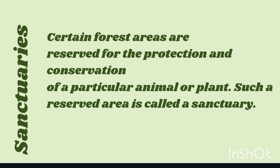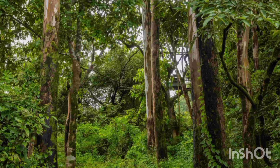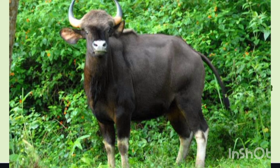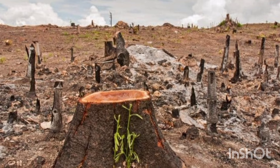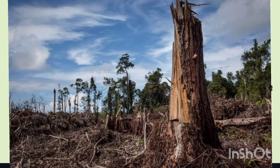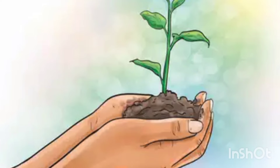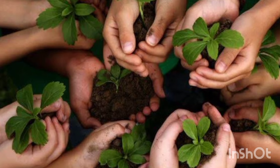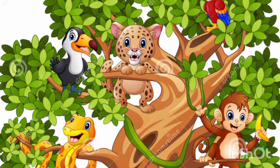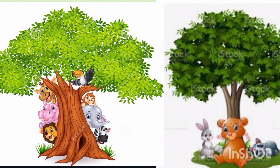Certain forest areas are reserved for the protection and conservation of a particular animal or plant. Such a reserved area is called a sanctuary — for example, Randagari Sanctuary for bisons. If plants on earth are destroyed, the number of animals will also fall. That is why it is necessary to protect plants in the forest. If deforestation is stopped and tree plantation is stepped up, animals that depend on plants will get protection and thrive.